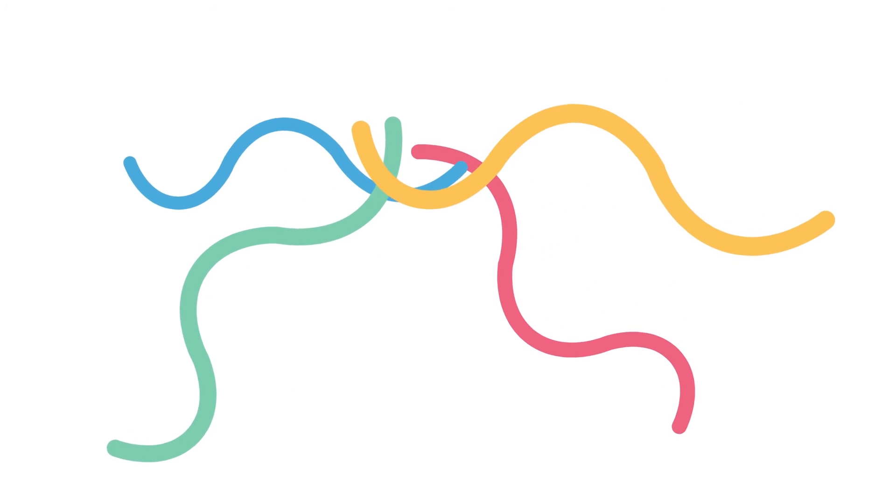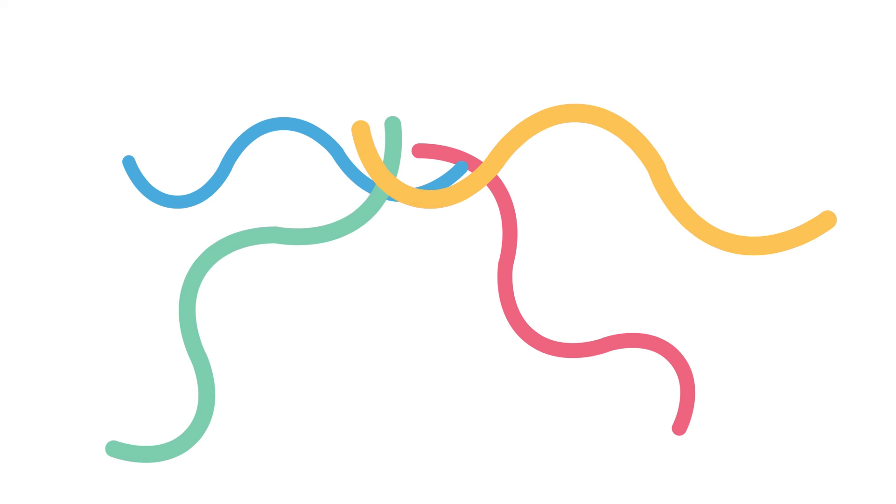Denaturing is where the folded protein that makes up an enzyme unravels, losing its structure, and with it the active sites, so that it can no longer bind to the substrate.